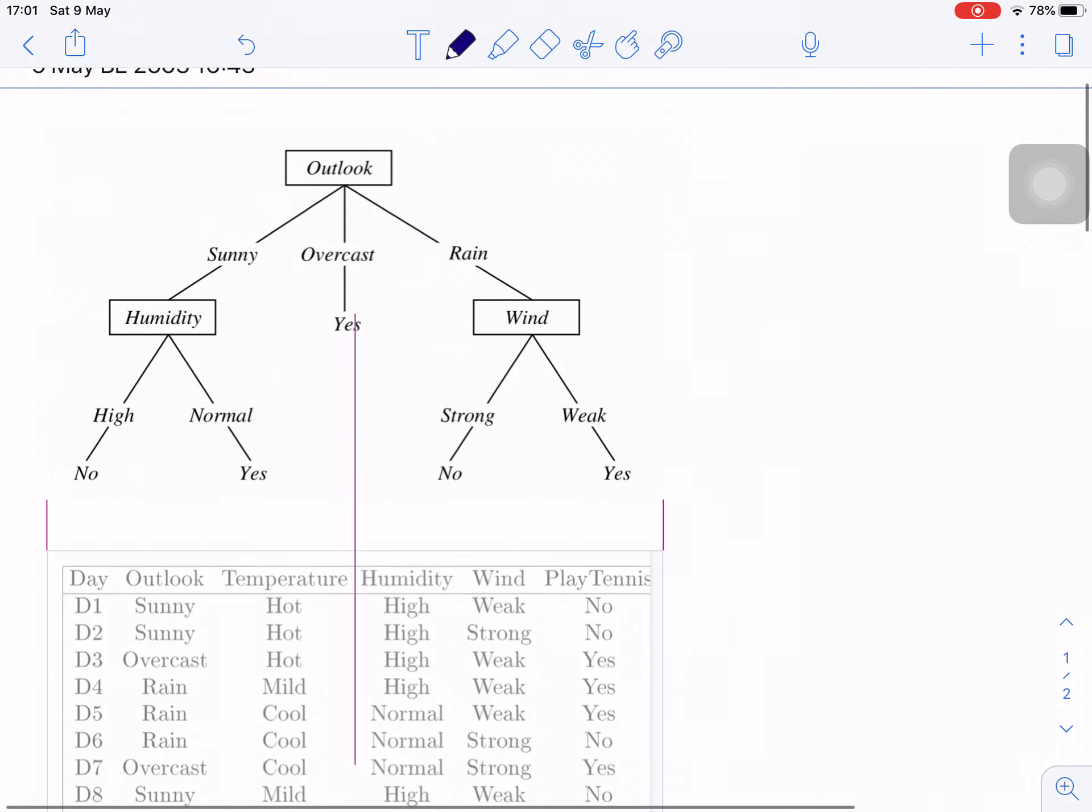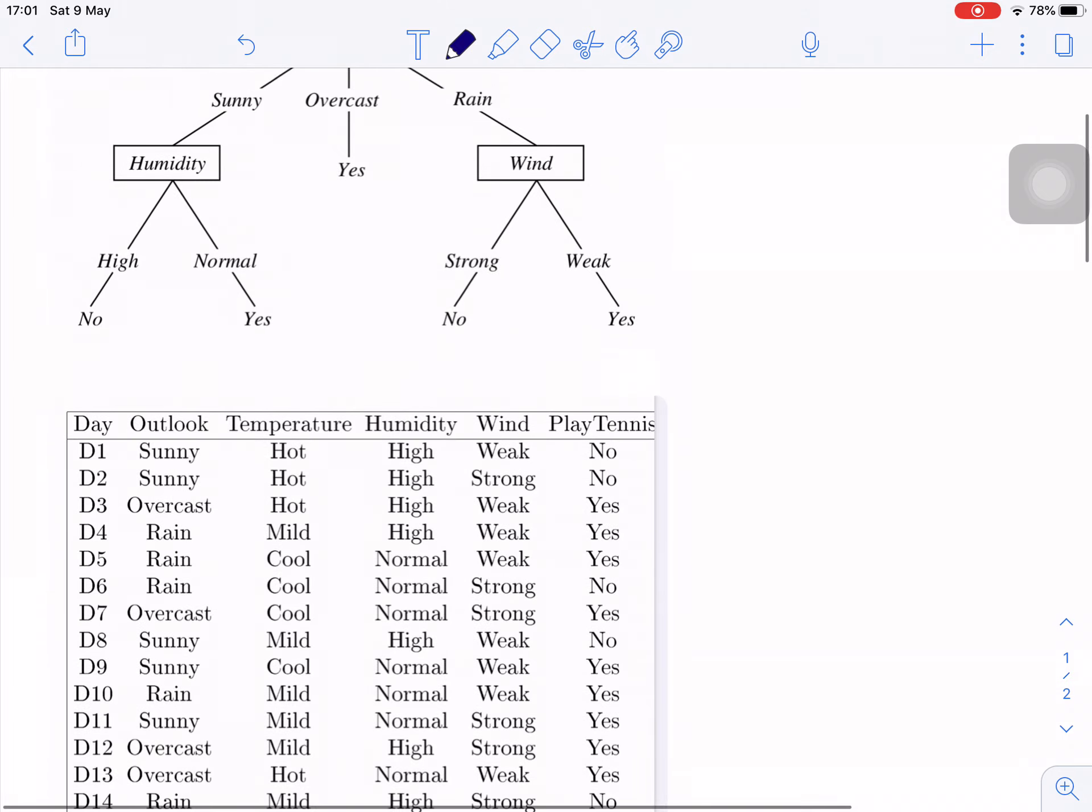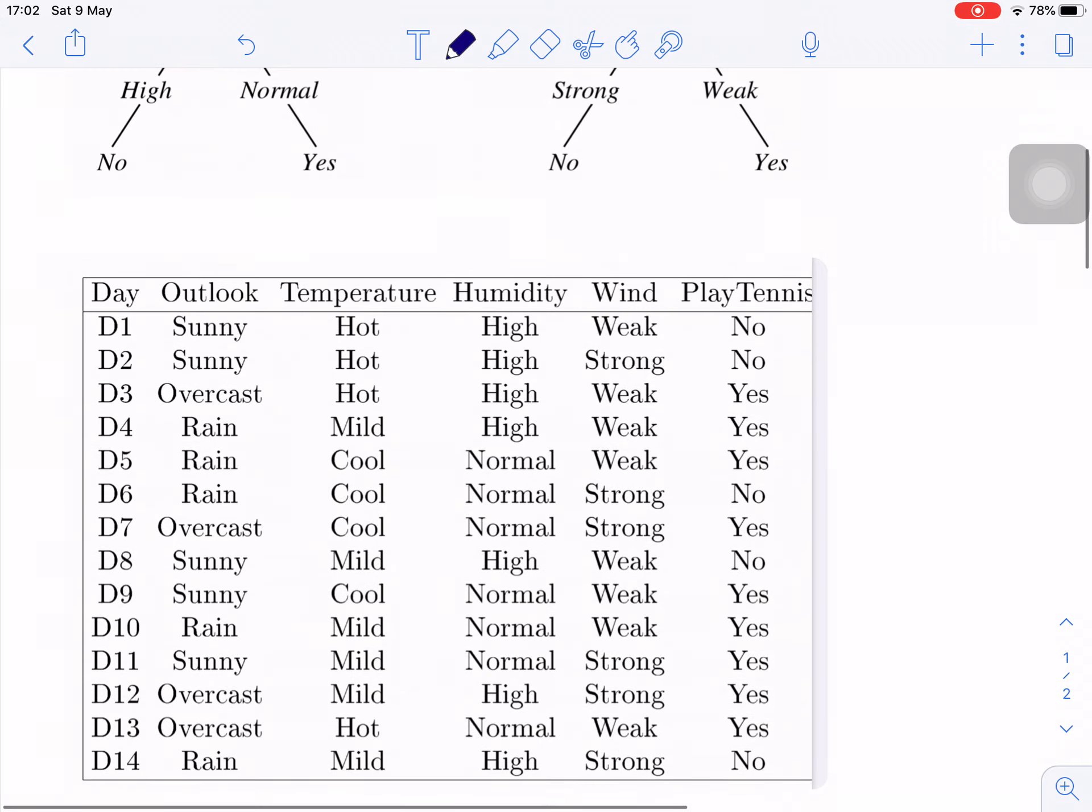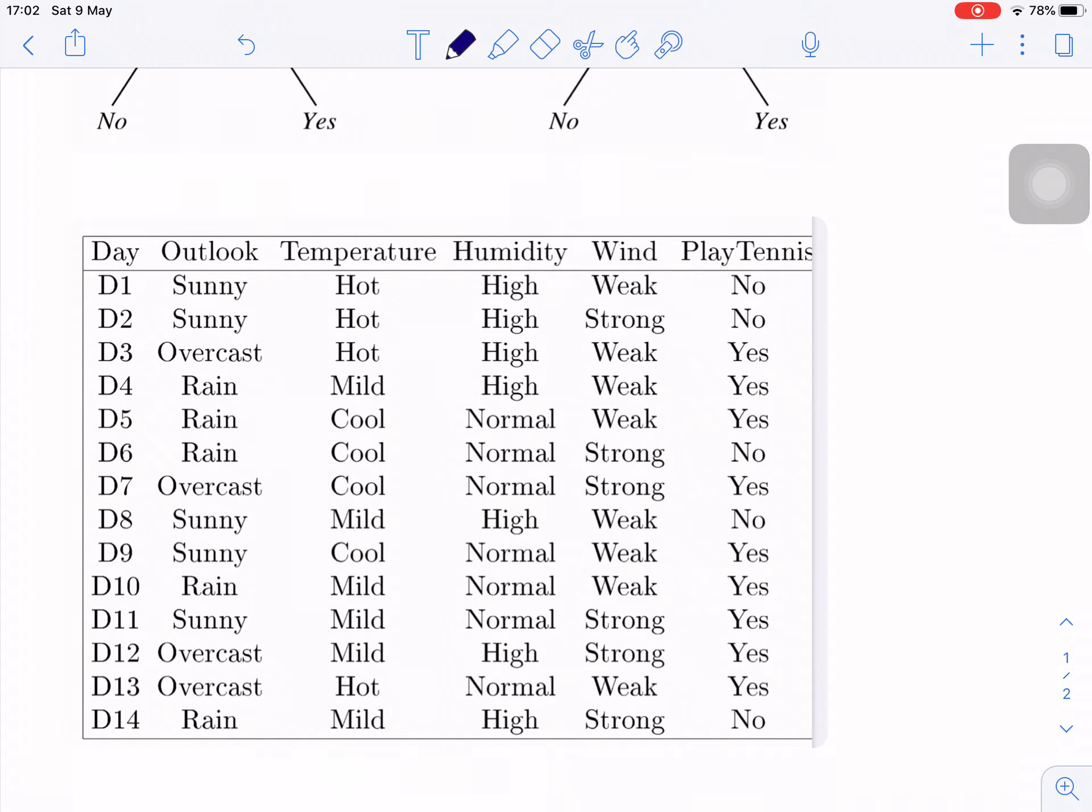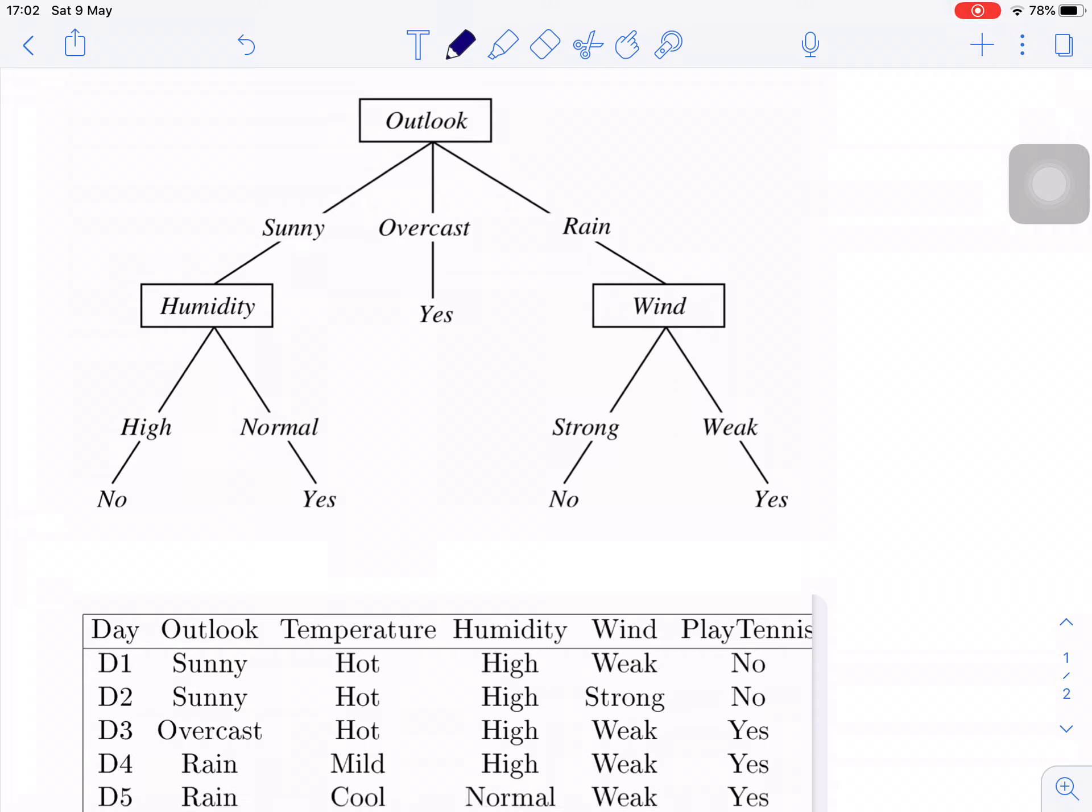You have 14 days of observation. Each day, the characteristics of the day is like this. On the first day, outlook is sunny, temperature is hot, humidity is high, wind is weak, and the one who is observing doesn't play tennis. You have the data for 14 days. Your task is to build a tree that can explain when he or she, who is the owner of this data, will play tennis or not play tennis.